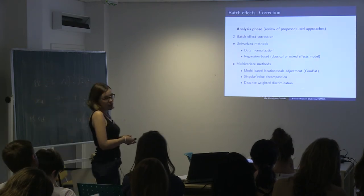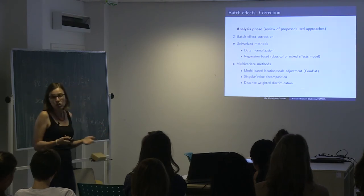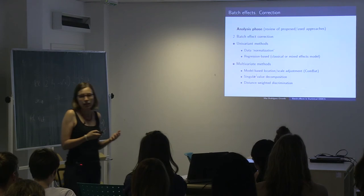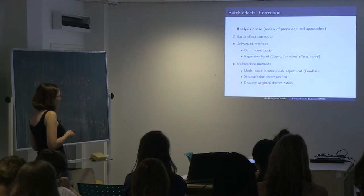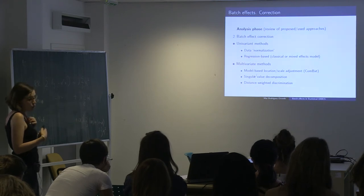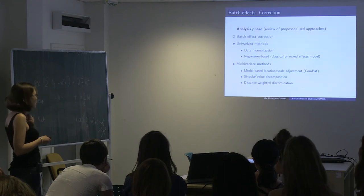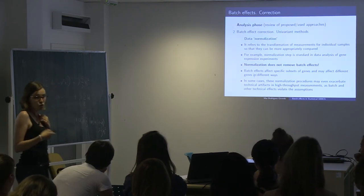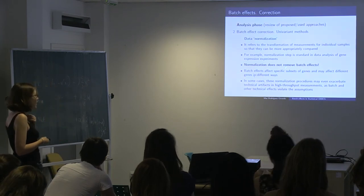Now we know it is important to be aware of and quantify batch effects; we would like to correct them. There is a large literature on proposed methods, most of limited use. Methods include univariate approaches (one feature at a time) and multivariate approaches. Data normalization has been used as a correction step, but in general it does not remove batch effects — it makes features comparable in mean and variance, but the batch effect affects specific gene subsets differently. Sometimes normalization even reveals batch effects more clearly.